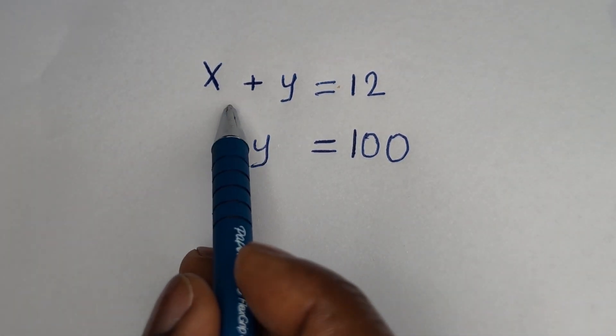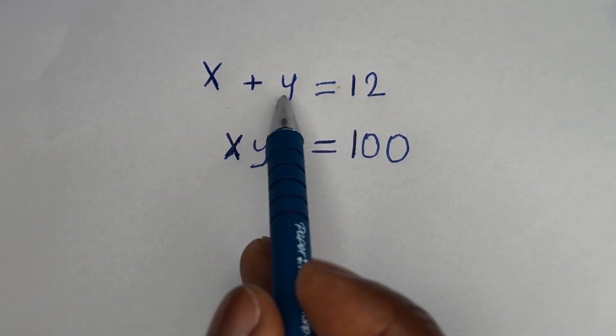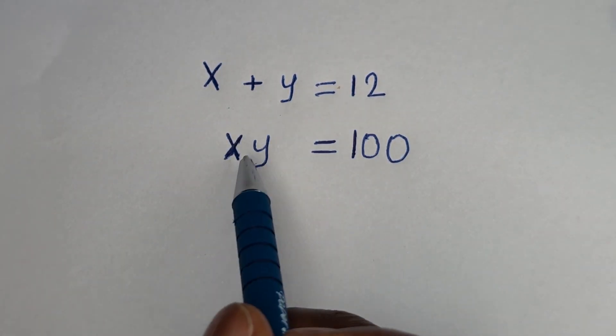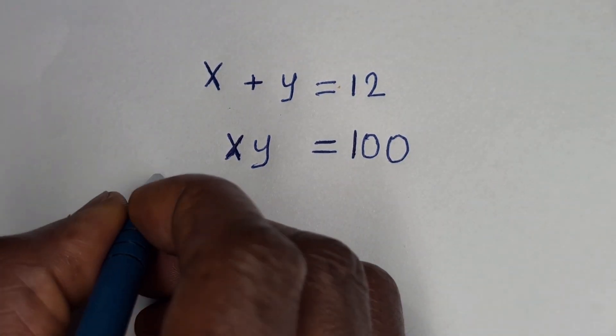Hello. How to solve for S and Y in this equation: S plus Y is equal to 12, and SY is equal to 100.